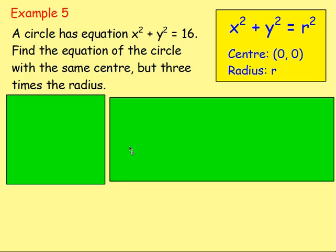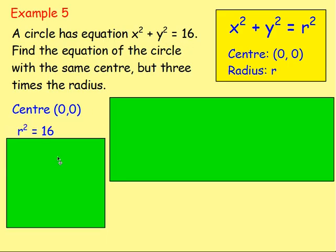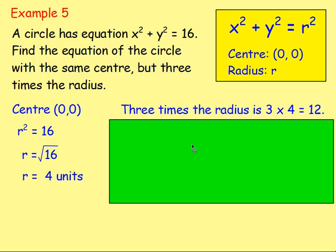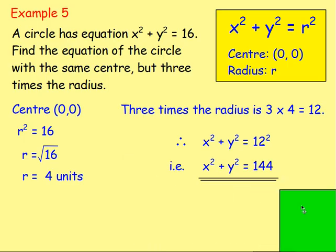Example number 5: a circle has equation x-squared plus y-squared equals 16. Find the equation of the circle with the same centre but 3 times the radius. The centre is (0,0). We need the radius of this circle first: r-squared equals 16, so r equals the square root of 16, which is 4 units. If we want a circle 3 times the size, the radius is 3 times 4, which gives 12. The equation of the larger circle is x-squared plus y-squared equals 12-squared.